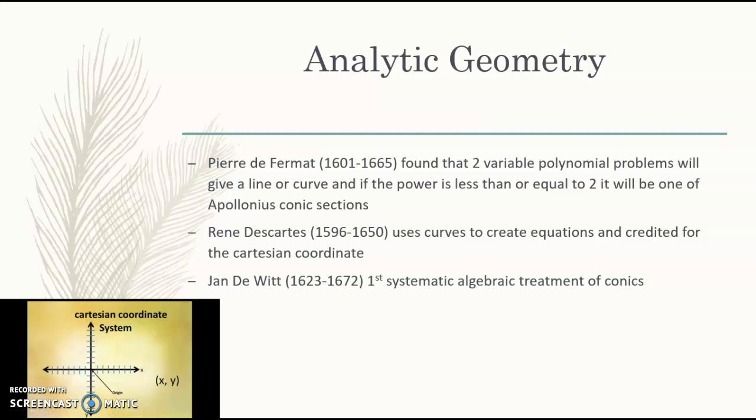Moving on to analytic geometry. We have Pierre de Fermat. He found that two variable polynomial problems will give a line or curve, and if the power is less than or equal to two, it will be one of Apollonius' conic sections. We also have René Descartes, who used curves to create equations and was credited for the Cartesian coordinate system, which we see down here. We also have Jan de Witt. He was the first systematic algebraic treatment of conics.